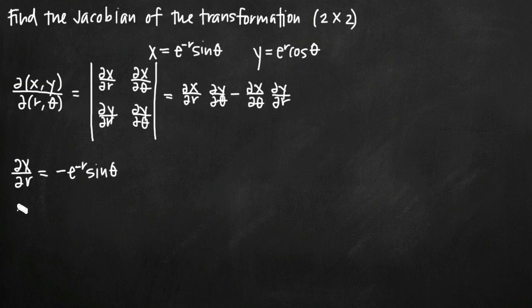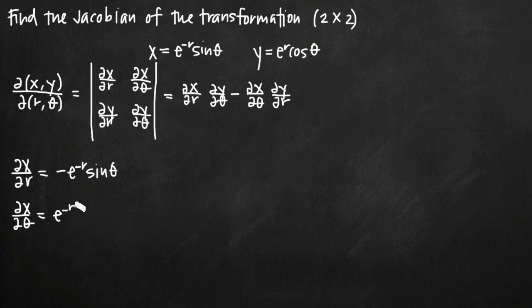Now we take the partial derivative of x with respect to theta, treating theta as the variable and r as a constant. In this case, e to the negative r is a constant coefficient on the sine theta term — like three times sine of theta where three is a constant. Since the derivative of sine is cosine, we get e to the negative r times cosine of theta.